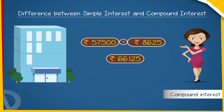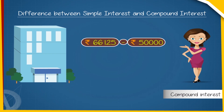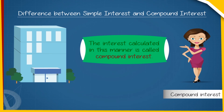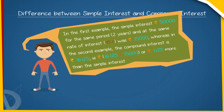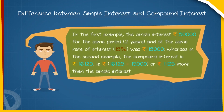Hence, total interest payable to the company equals Rs. 66,125 minus Rs. 50,000 equals Rs. 16,125. The interest calculated in this manner is called compound interest. In this case, the compound interest is Rs. 16,125 on Rs. 50,000 for 2 years at 15% per annum. In the first example, the simple interest on Rs. 50,000 for the same period of 2 years at the same rate of 15% was Rs. 15,000. Whereas, in the second example, the compound interest is Rs. 16,125, that is Rs. 1,125 more than the simple interest.